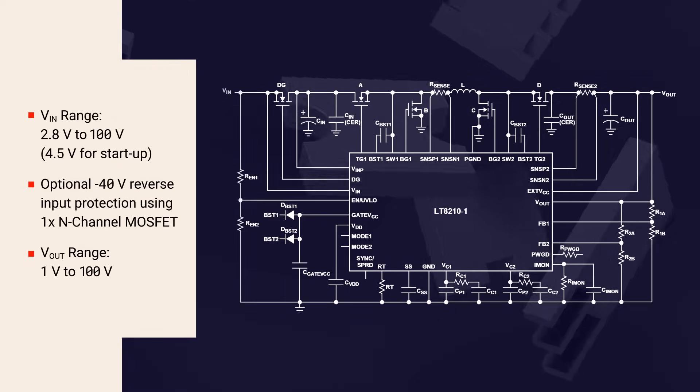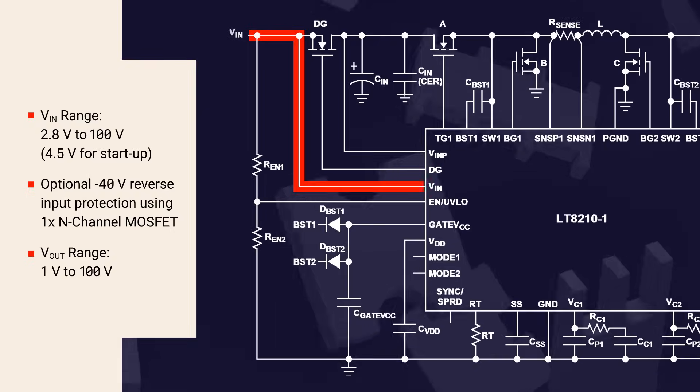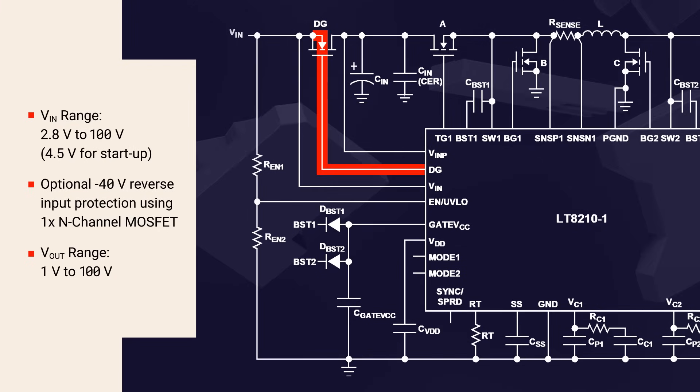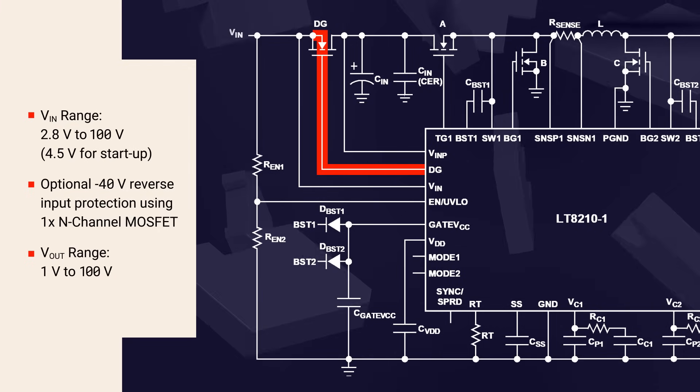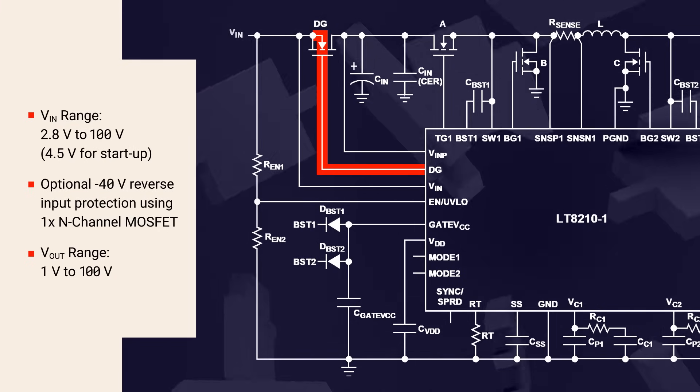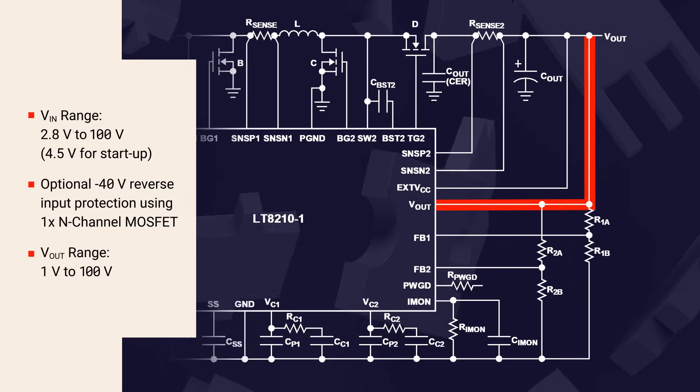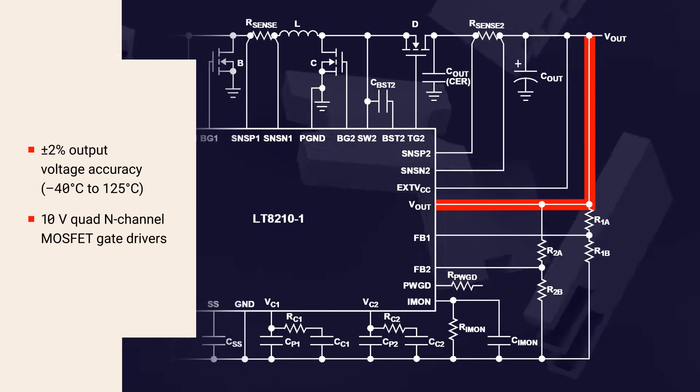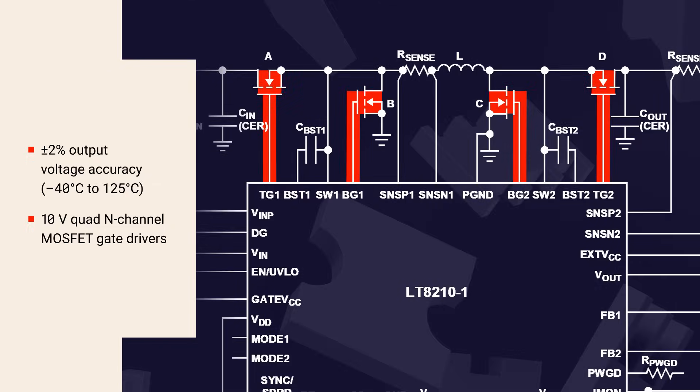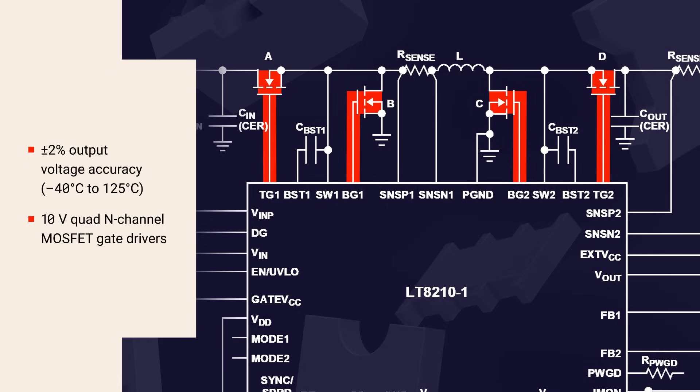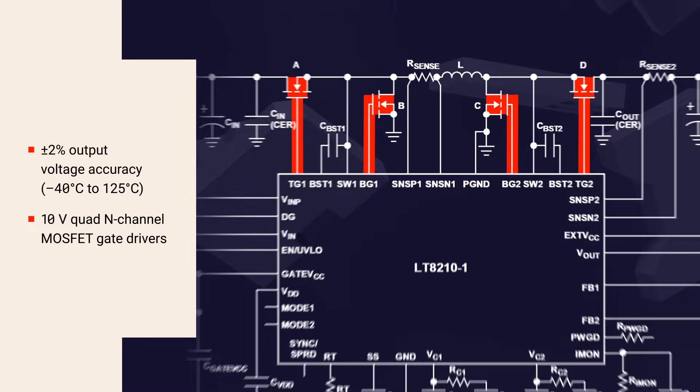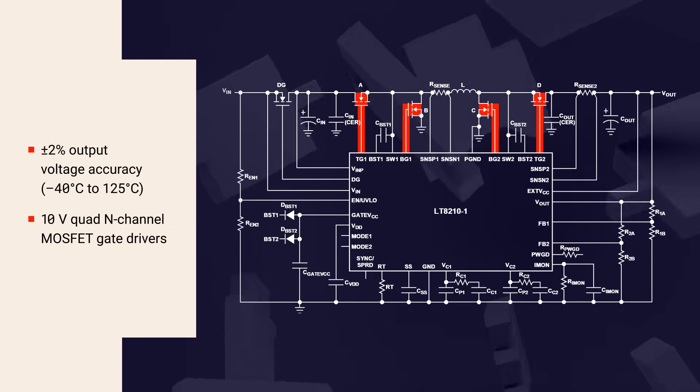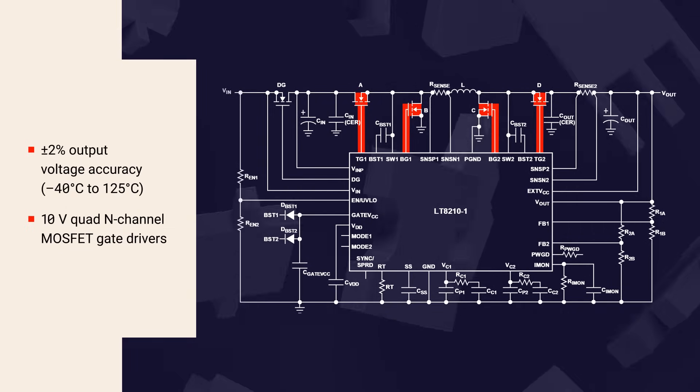The LT8210-1 supports an input range from 2.8 to 100 volts with a 4.5 volt minimum for startup and optional reverse input protection up to minus 40 volts can be added with a single N-channel MOSFET. It can regulate the output from 1 to 100 volts with plus or minus 2% output voltage accuracy using four 10-volt gate drivers to control four external N-channel power MOSFETs in a proprietary topology and control architecture to maximize efficiency and provide clean transitions between different switching regions.